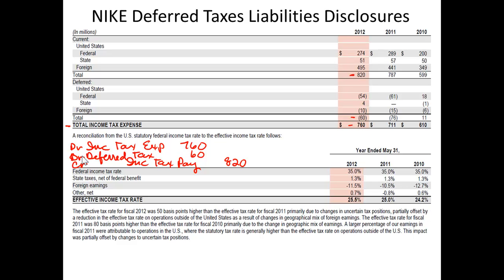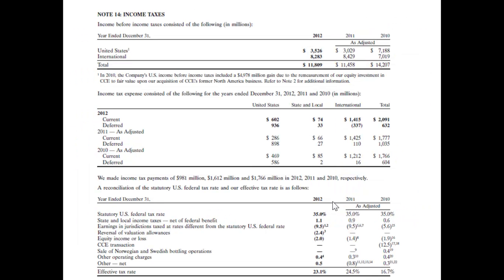The other thing you always have to disclose is the effective tax rate. Notice the U.S. tax rate is 35%, but Nike, because of its foreign activities, only pays an effective rate of 25.5%. Here's Coca-Cola's, and again you can see that you're told the effective rate and how much of the tax is current and how much of it is deferred. So that's a simple snapshot of deferred taxes.